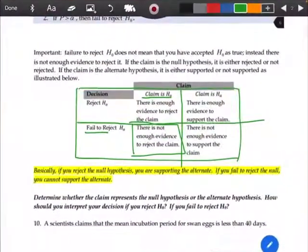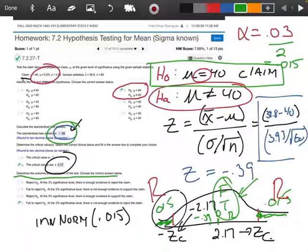So, come back here. We fail to reject, and at 3% significance, there is not enough evidence to reject the claim.